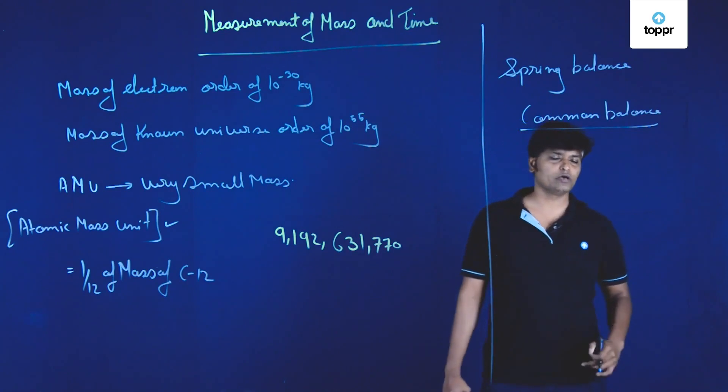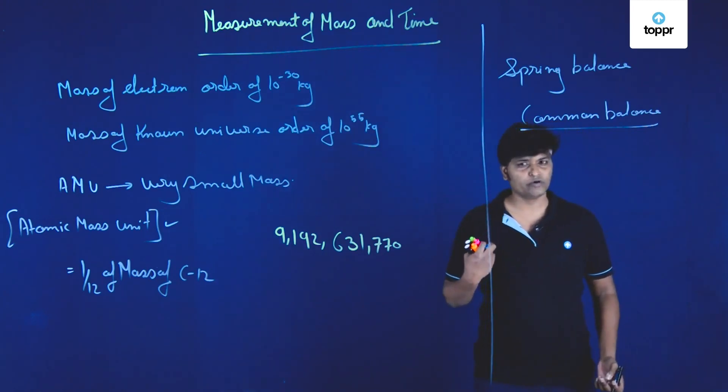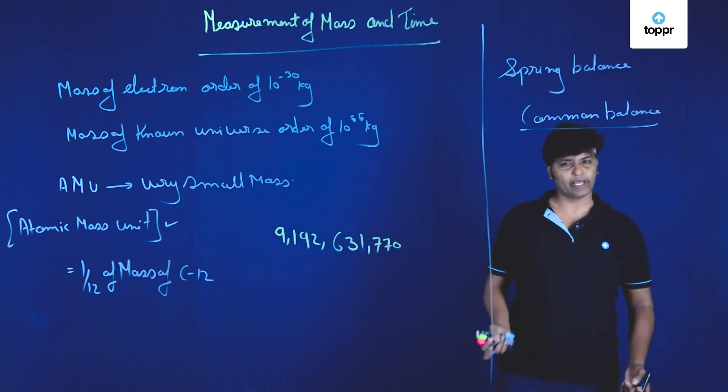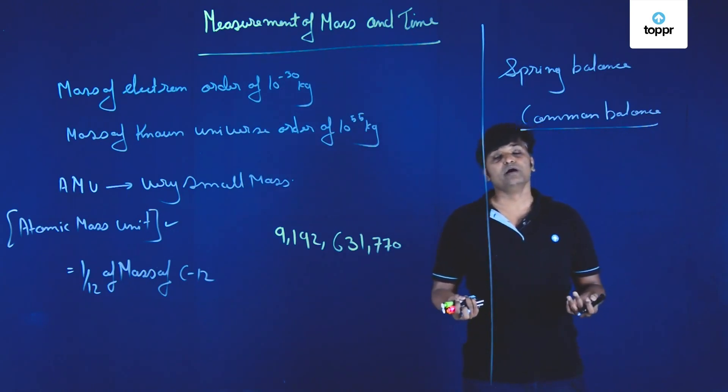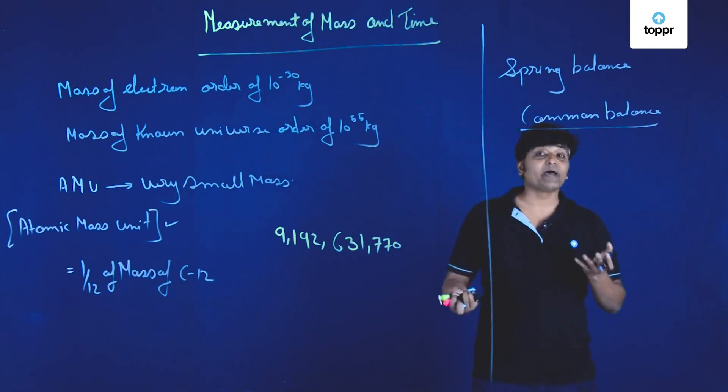You might have gone to your local vegetable vendor who puts one kilogram on one pan of the balance and vegetables on another pan of the balance. So in that particular common balance you usually compare the masses.